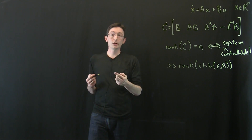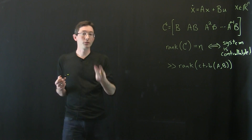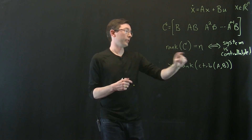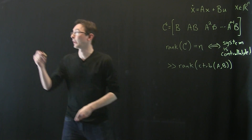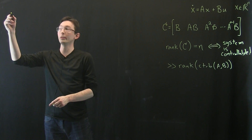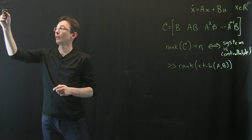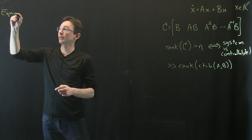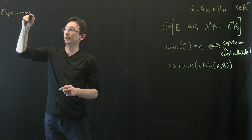What I want to show you now is that there are three equivalent things — three things that are equivalent to controllability. These are some equivalences that are extremely important.